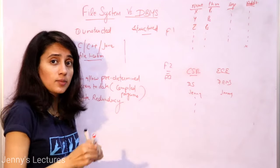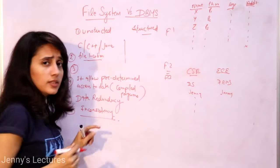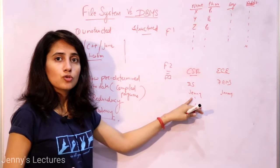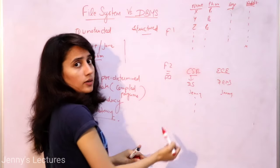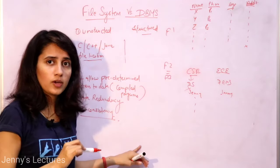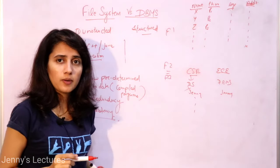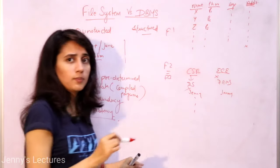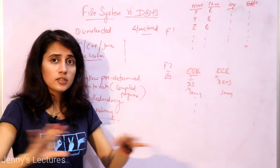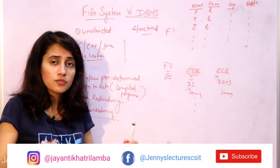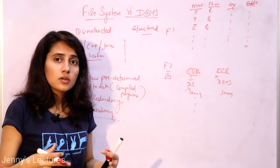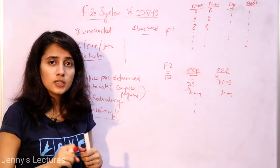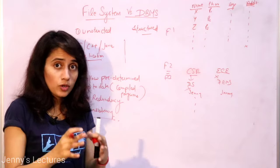Because of this redundancy, another problem arises: data inconsistency. Suppose that faculty leaves the college. The CSC department updates their table and deletes the profile, but the EC department's file still has the profile. Now the data is inconsistent — changes should be reflected in all tables. Manually updating 10, 15, or 20 tables is very tough. That is why DBMS is needed for managing a large database.